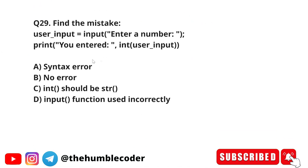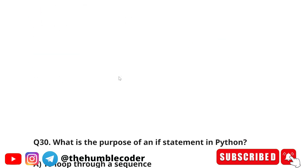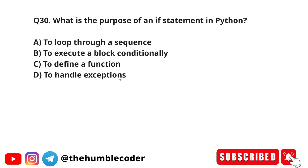Next question: find the mistake in this code — user_input = input('Enter a number:'); print('You entered:', int(user_input)). Options are: syntax error, no error, int function should be string, input function used incorrectly. The correct answer is option B: no error. The code correctly takes user input, converts it to integer with int(), and prints it.